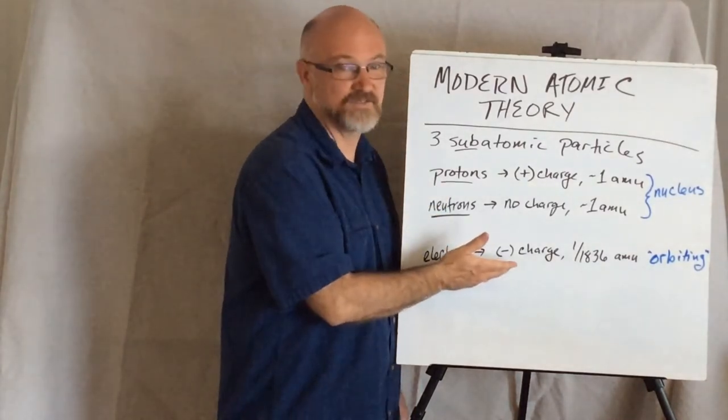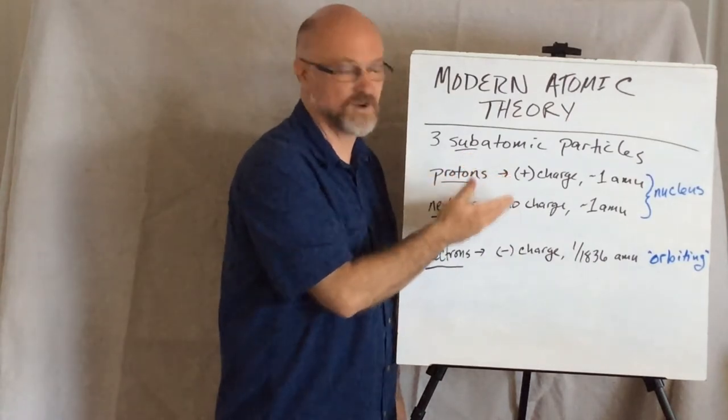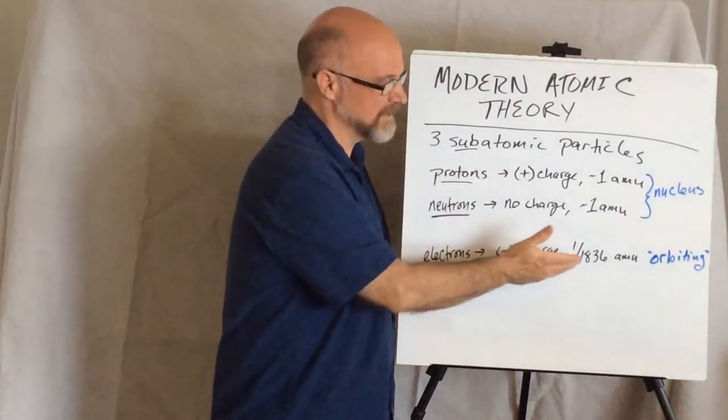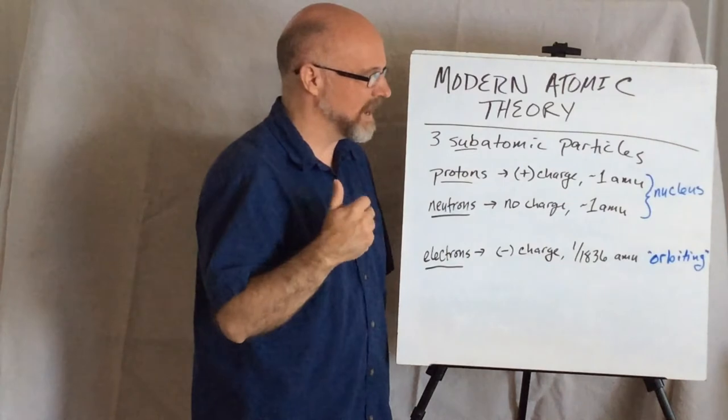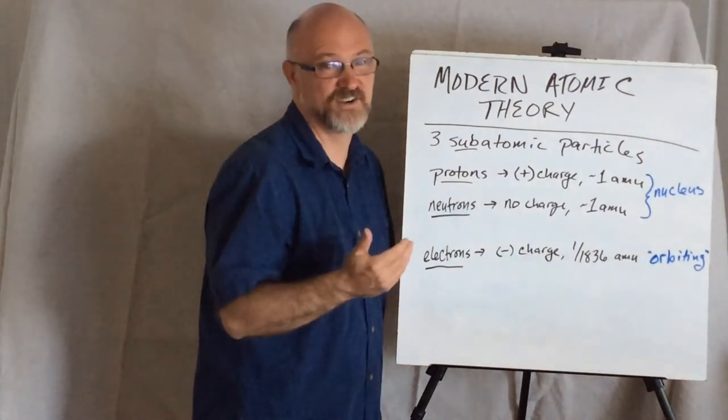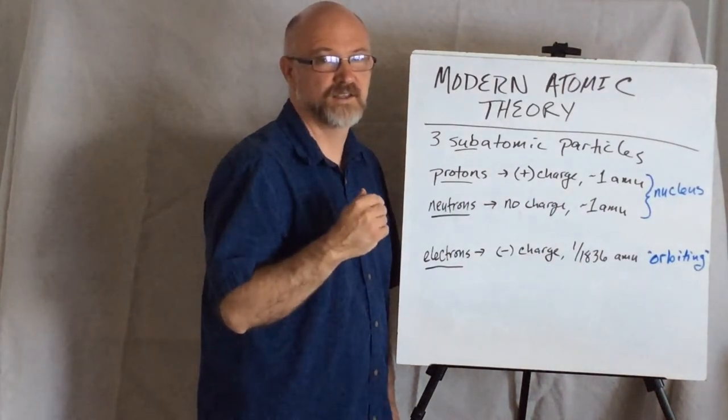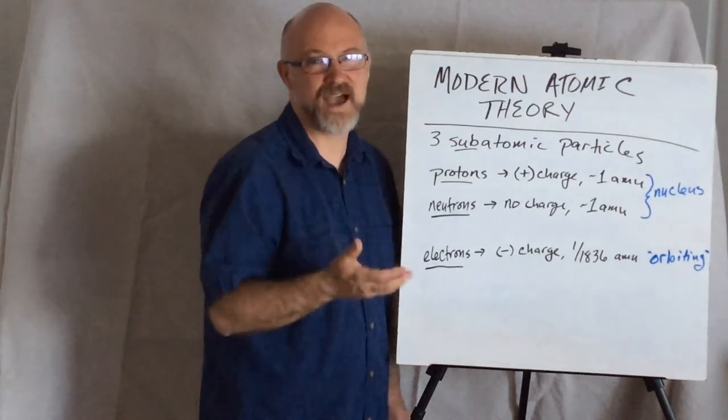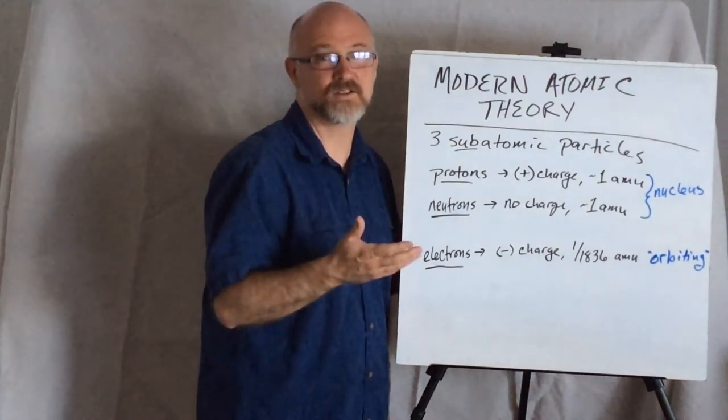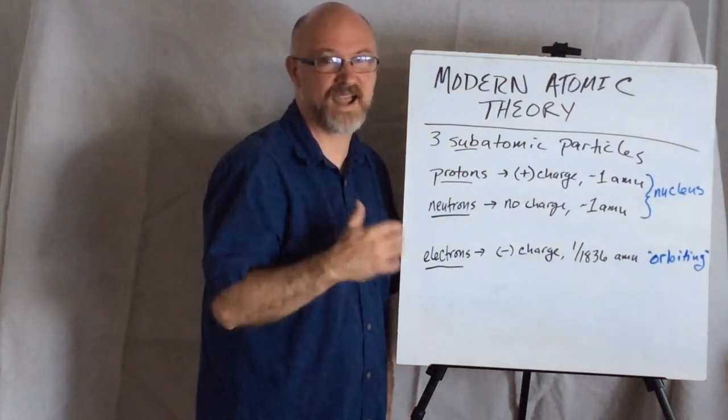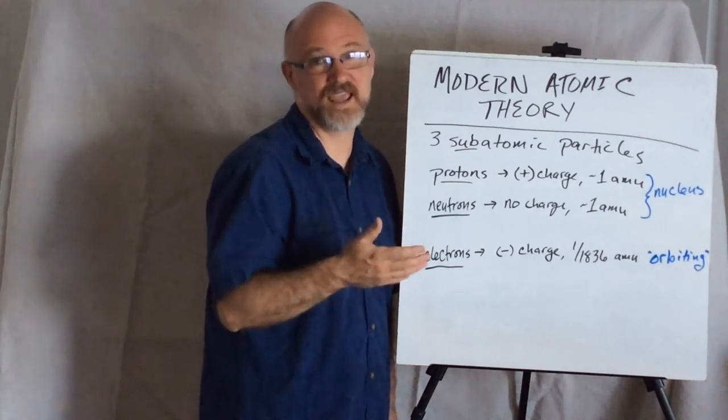Electrons have the negative charge that counterbalances the positive charge of the protons. Their mass is 1/1,836 of a proton. So, we say that the mass of an electron is fairly negligible. It doesn't really count. It doesn't hit the scale.